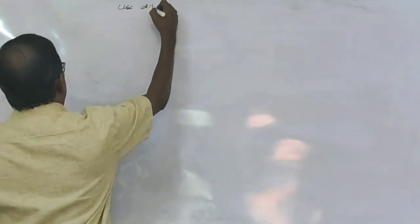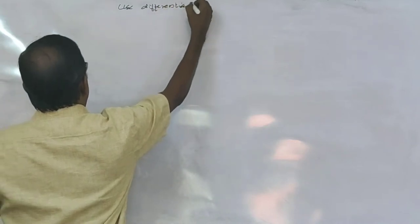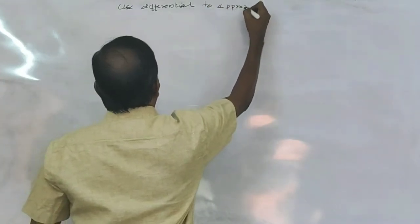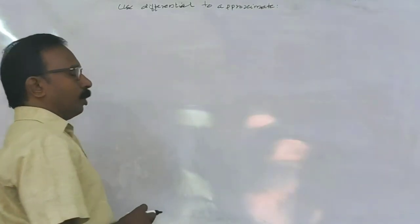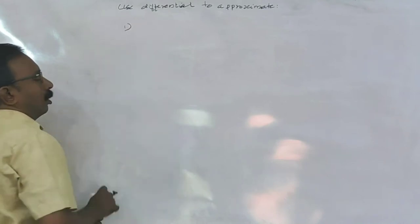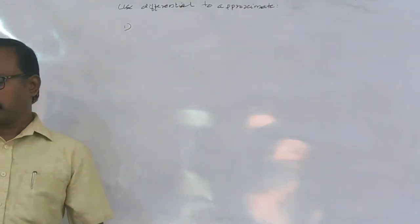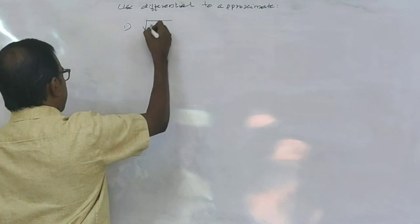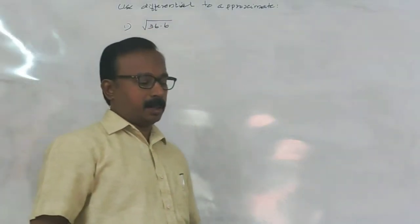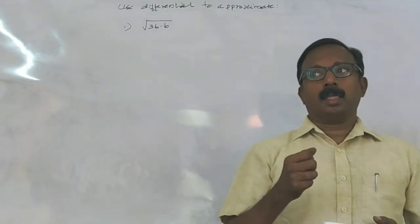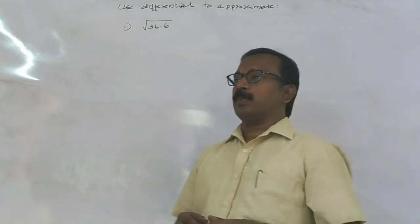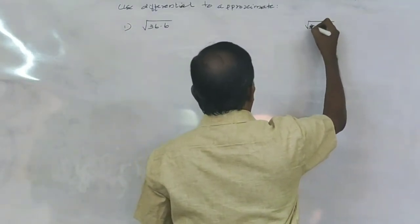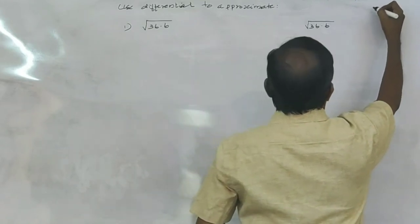Use differentials to approximate. The first question is: find the approximate value of the square root of 36.6. We can take the function from the question in the form root of 36.6, so y is equal to the root of x.